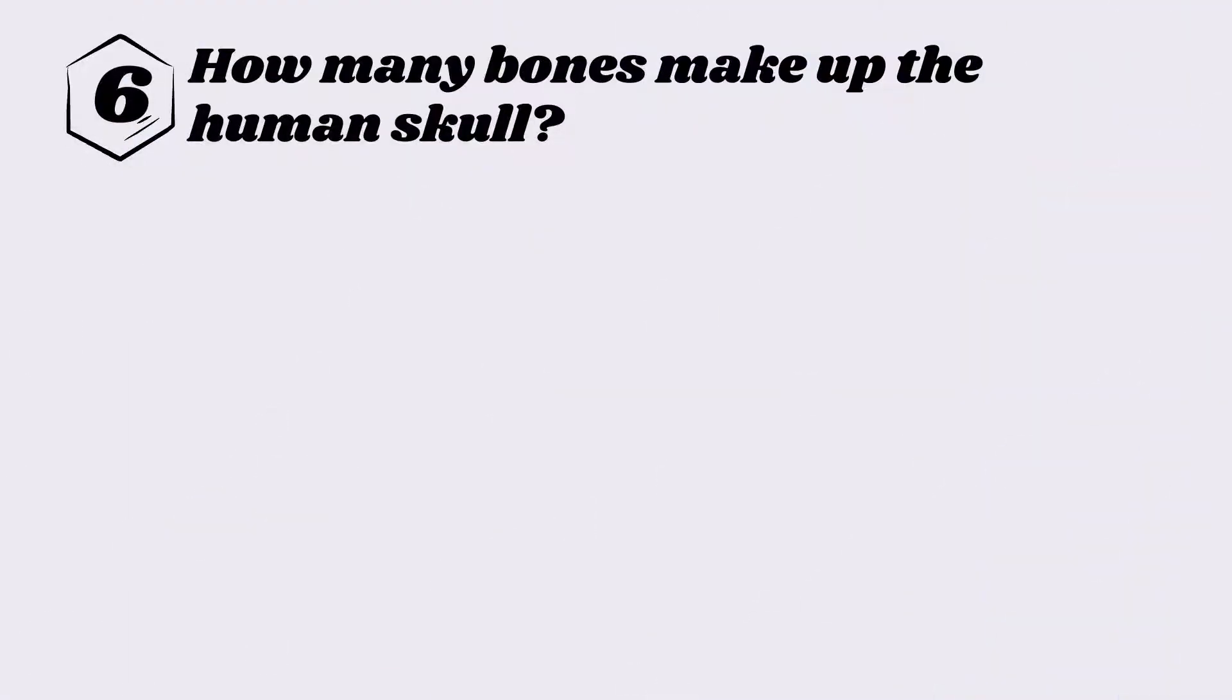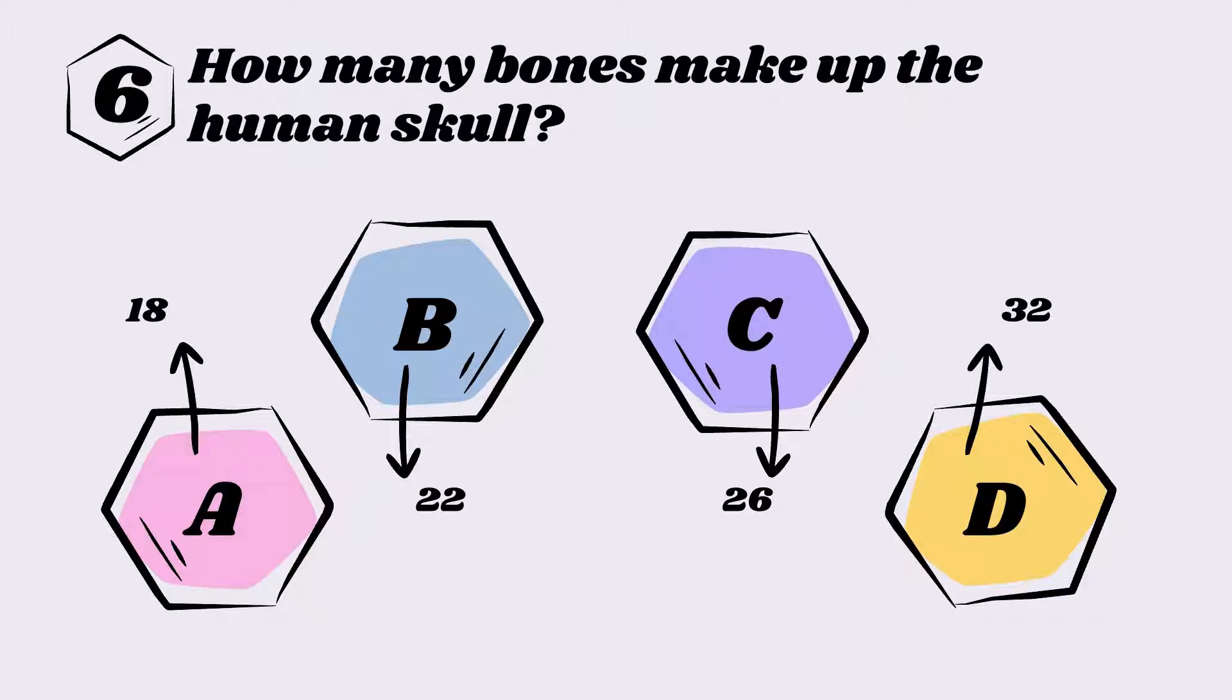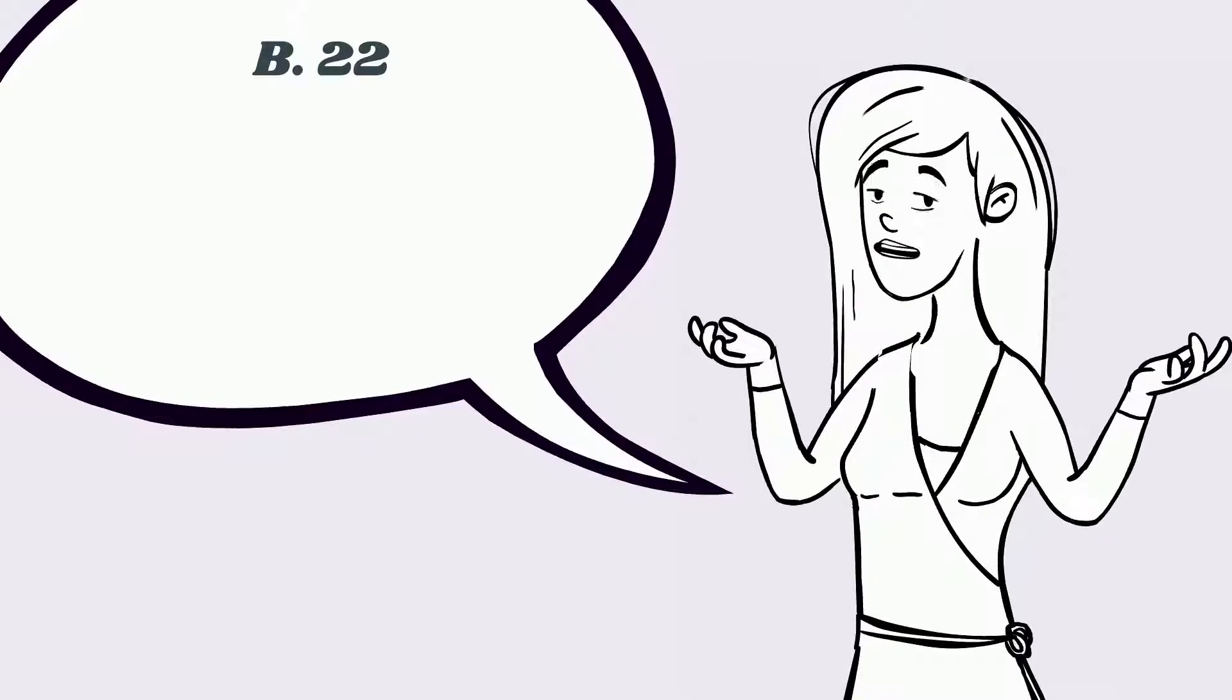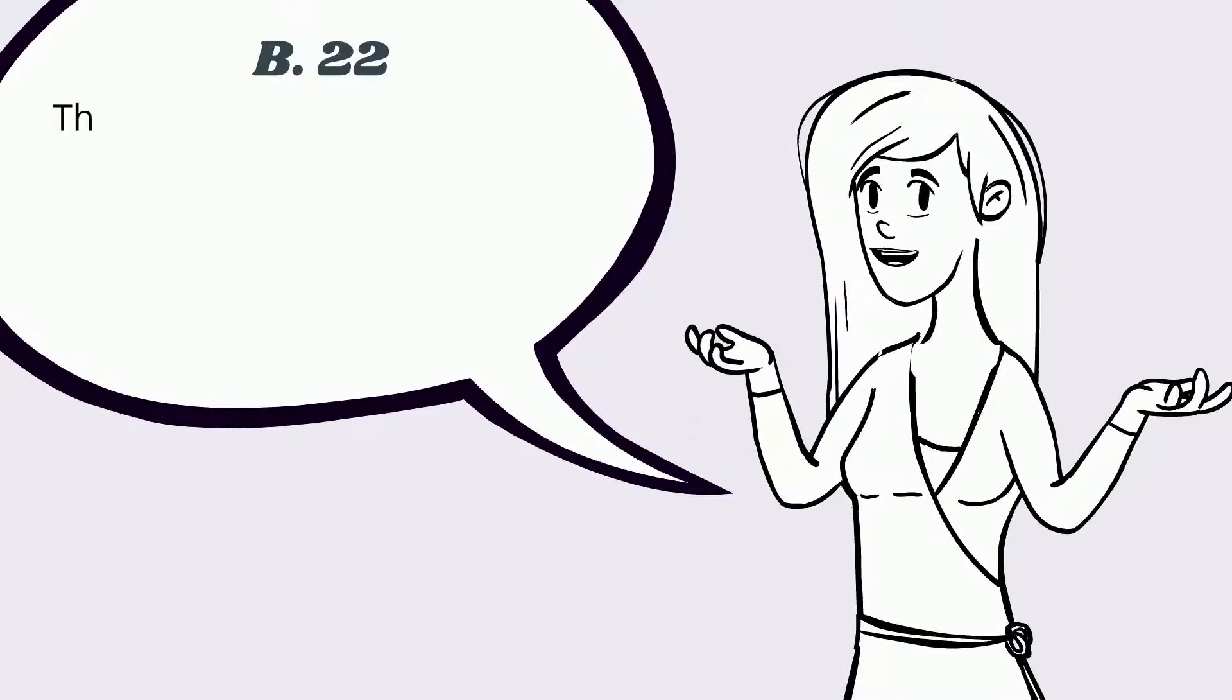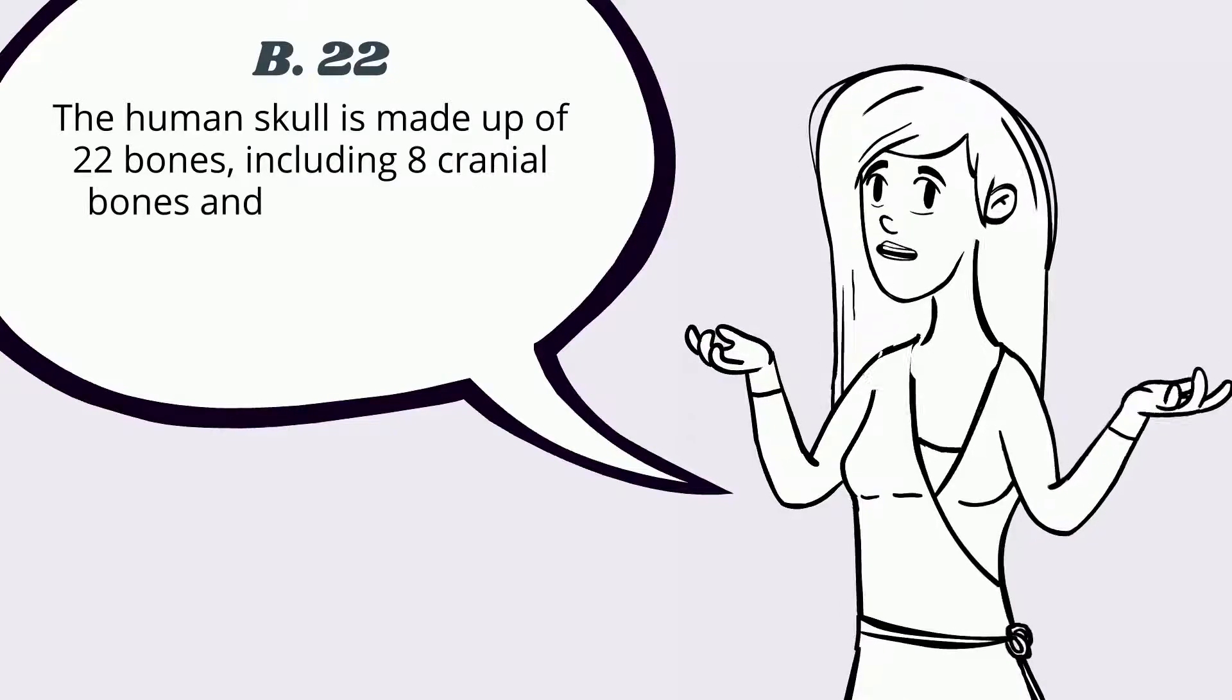Question six: How many bones make up the human skull? A) 18, B) 22, C) 26, D) 32. The answer is B, 22. The human skull is made up of 22 bones, including 8 cranial bones and 14 facial bones.